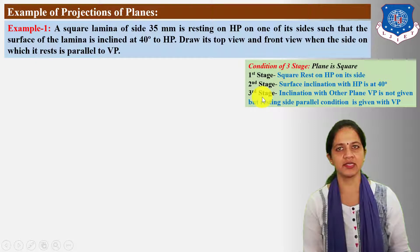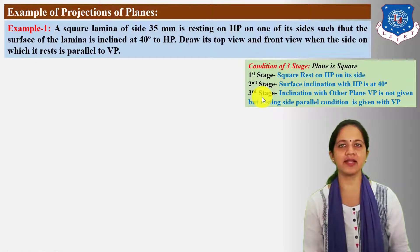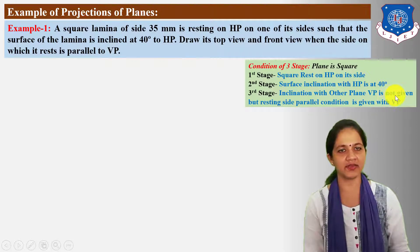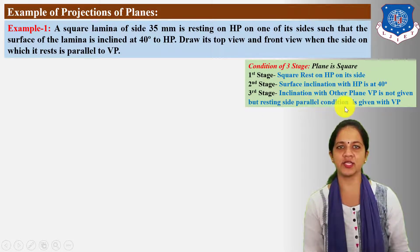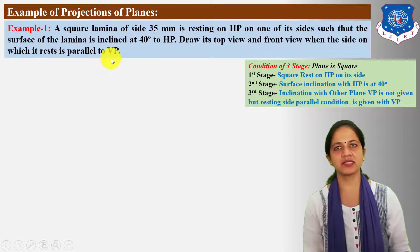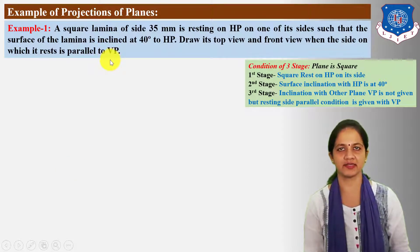In the third stage, we need to take the angle condition with VP because the plane is resting on HP. Here, the inclination with VP is not directly given, but the resting side parallel condition is given with VP. So indirectly, the angle condition with VP is given as 90 degrees.